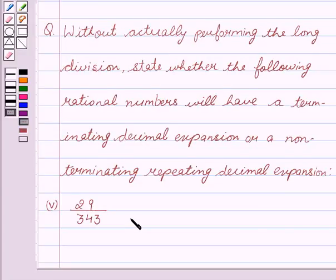We are going to discuss real numbers. Our given question is, without actually performing the long division, state whether the following rational numbers will have a terminating decimal expansion or a non-terminating repeating decimal expansion. Our given problem is 29 upon 343.